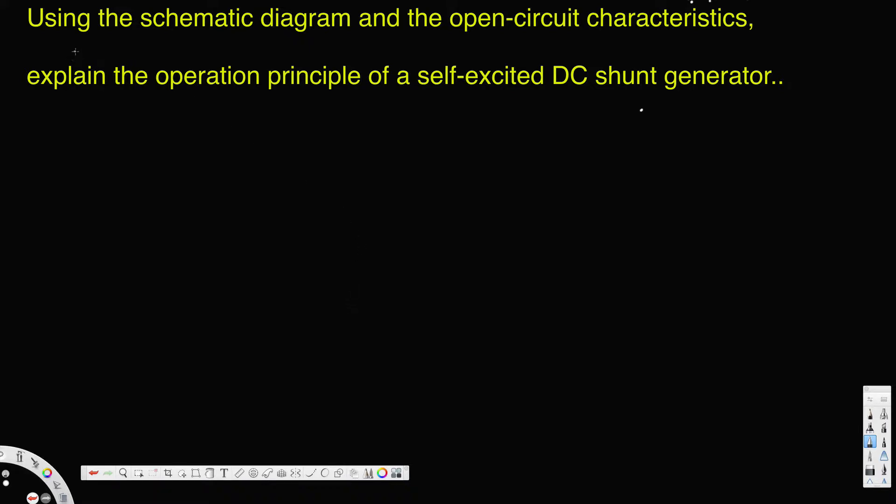What's going on guys, let's look at this problem right here. This question is asking: using the schematic diagram and the open circuit characteristics, explain the operation principle of a self-excited DC shunt generator. Now let's see how we can explain this.